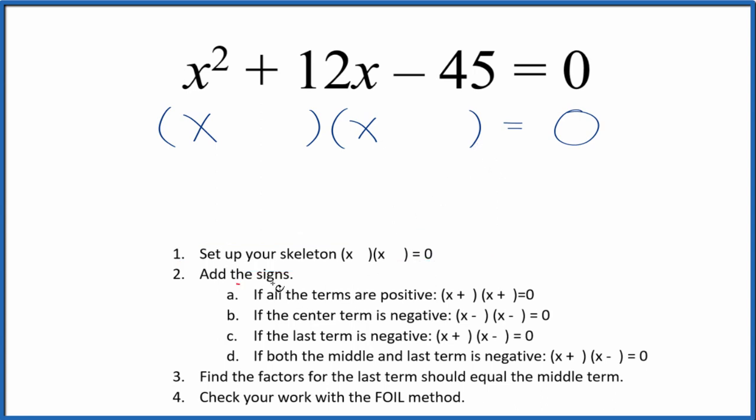When we have our skeleton equation, now we can add the signs. It looks like we have a positive and a negative. If the last term is negative, we're going to put a positive and a negative in our skeleton equation, like this.